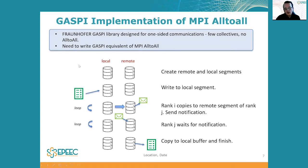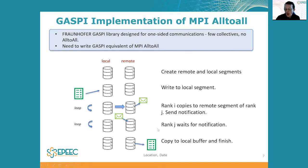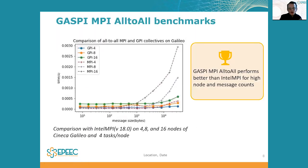The basic idea of the GASPy all-to-all is as follows: for each GASPy rank we create data segments — one where data to be sent is stored, and one where received data is kept. We transfer the data to our local segment, which is then copied to the appropriate place on remote segments. A notification is sent, the receiving rank waits for the notification, and when finished we copy to the local buffer.